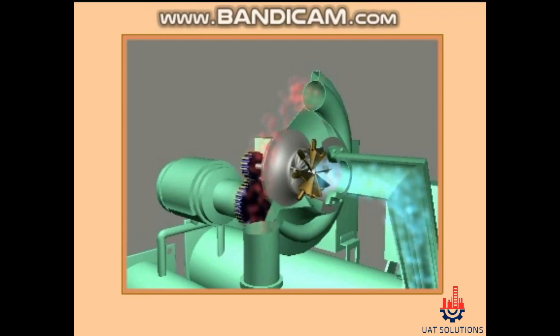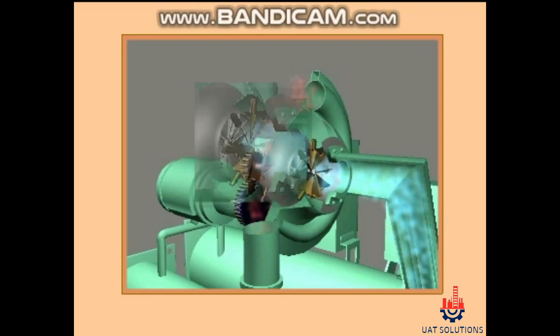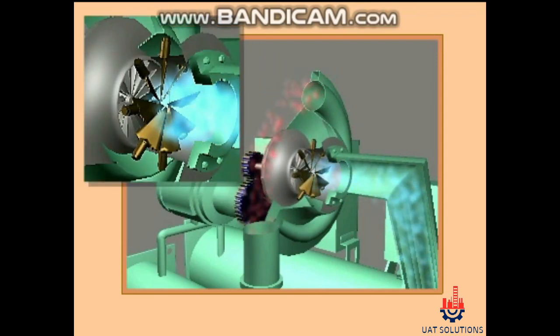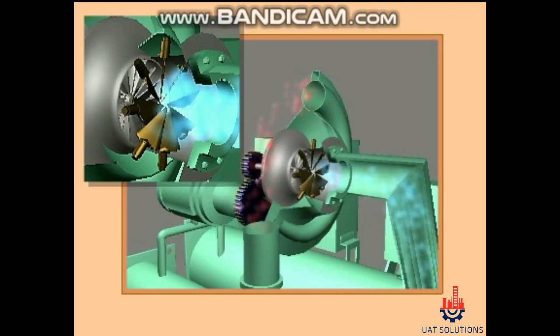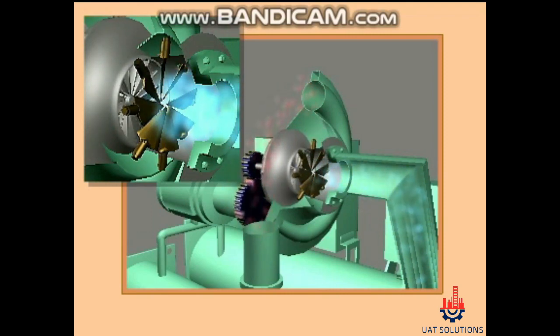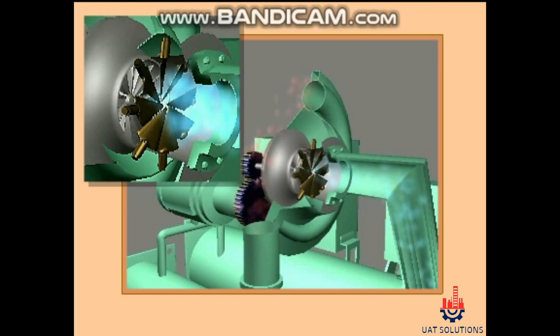As the load on the chiller decreases, the pre-rotation vanes begin to close and restrict the amount of refrigerant vapor entering the eye of the impeller, which reduces the amount of refrigerant being circulated.